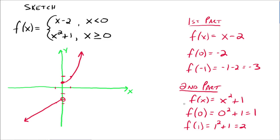This right here is the sketch of our piecewise function — notice it's in pieces, just like the function itself was in pieces. Everybody understand why the point 0, negative 2 is not included? Because we weren't allowed to use 0 there. And if we accidentally made that included, it would not be a function because it would not pass the vertical line test. So we need to be very careful about when a point is included and when it's not.